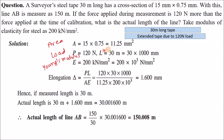First, make sure all units are in the same format. If area is in mm², load in Newton, and length in meters — convert everything to mm. Young's modulus in kilo Newton per mm² should be converted to Newton per mm² by multiplying by 10³. Then use the formula: delta L = P·L / (A·E).